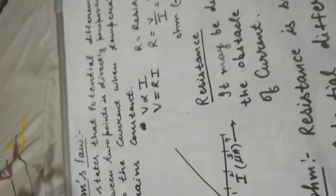Ohm's law is given by the scientist G.S. Ohm. Ohm's law states that the potential difference between two points is directly proportional to the current when temperature remains constant.